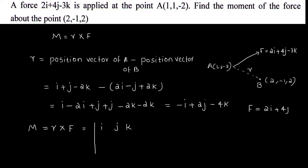We set up the cross product M = R × F using the determinant form with i, j, k. The R components are: i = -1, j = 2, k = -4. The F components are: i = 2, j = 4, k = -3.